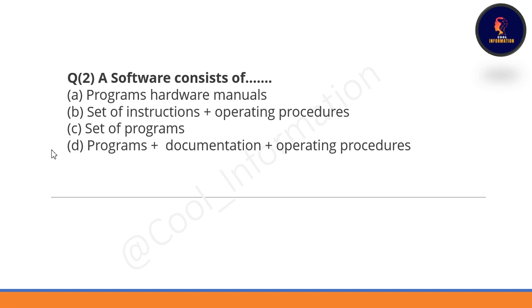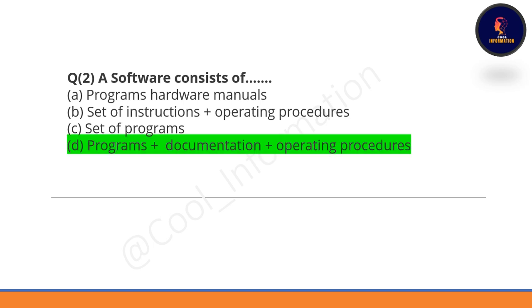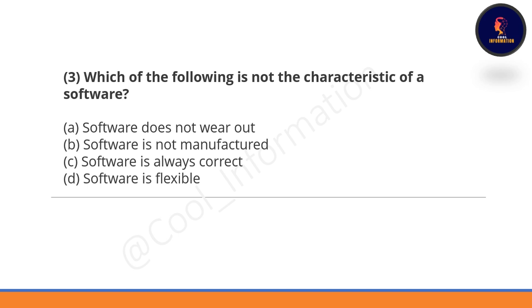Question 2: Software consists of what? Software consists of programs, documentation, and operating procedures. So Option D is correct.